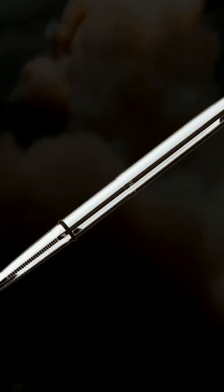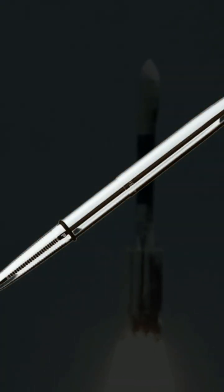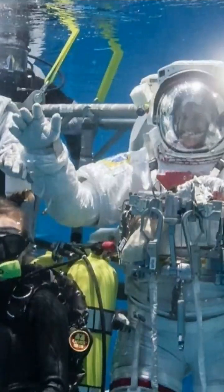This problem was encountered during the early space missions, and it was one of the reasons NASA developed the space pen. The space pen is a specially designed pen that uses pressurized ink cartridges and can write in zero-gravity, underwater, and at extreme temperatures.